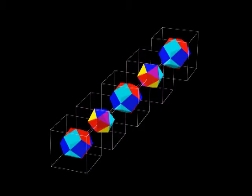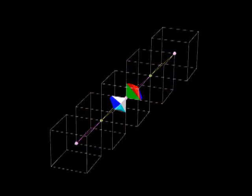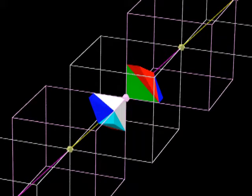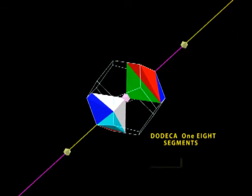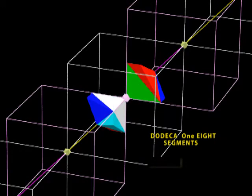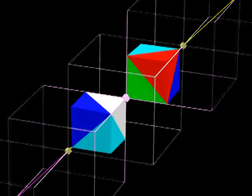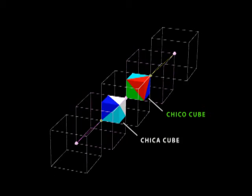Now I'd like to show you another discovery that I've made. We will focus in on the dodeca in the center. Now you see that the two one-eighth segments of the dodeca, it changes back into the Chico and Chica cubes. Now you can see the Chico and the Chica are positioned in the Plato cube in the center.